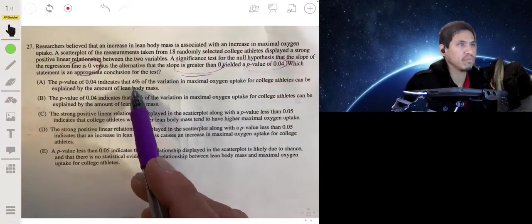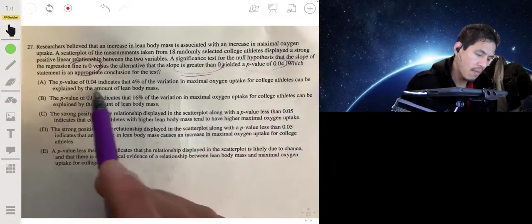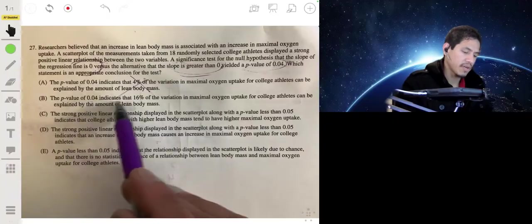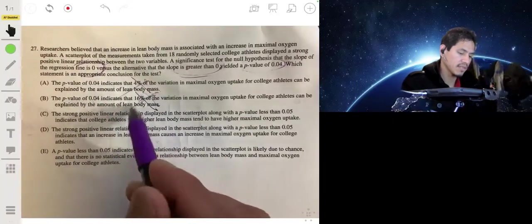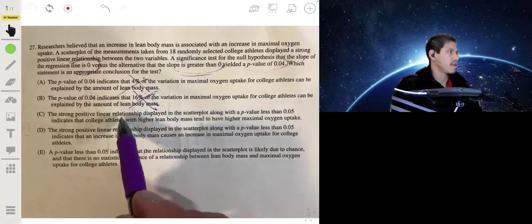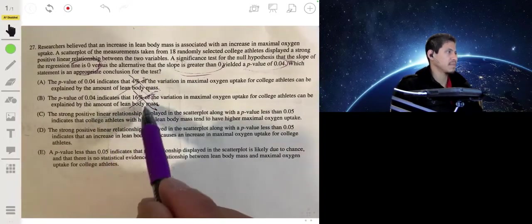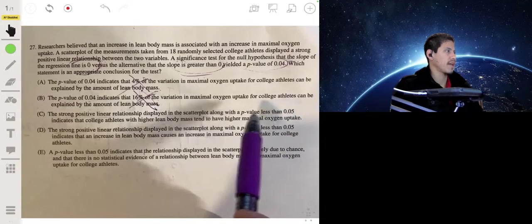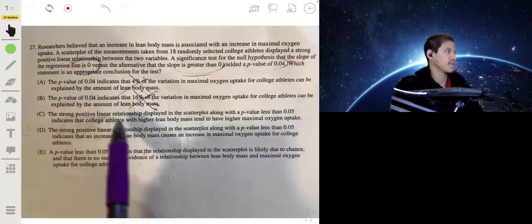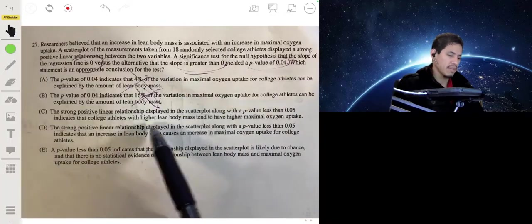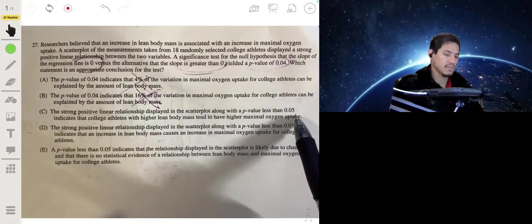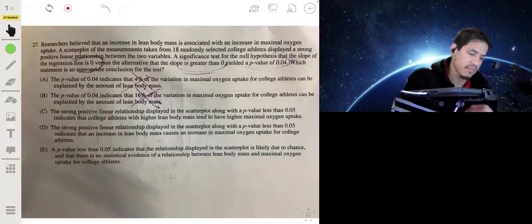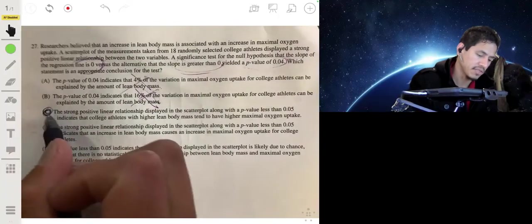Let's see which one of these would be the closest to that. The strong positive linear relationship displayed in the scatterplot along with the p-value is less than 0.05, so it is less than 0.05. And so it indicates that the college athletes with higher lean body mass tend to have higher maximal oxygen uptake. So it's basically saying that there is a strong positive relationship because the chance of this occurring is less than 5%. So the answer is going to be C most likely.